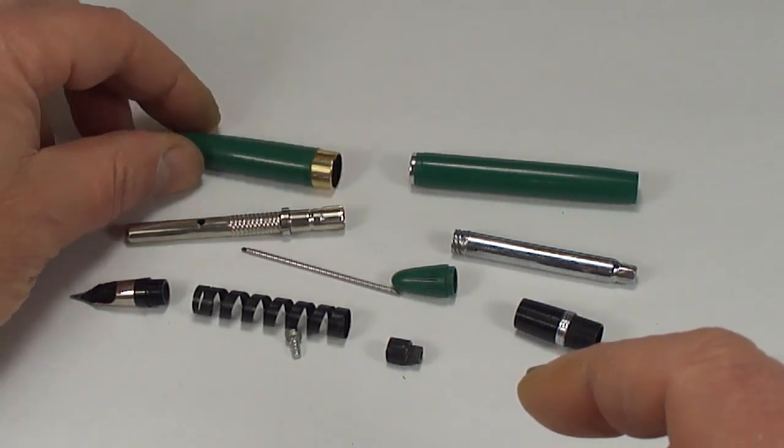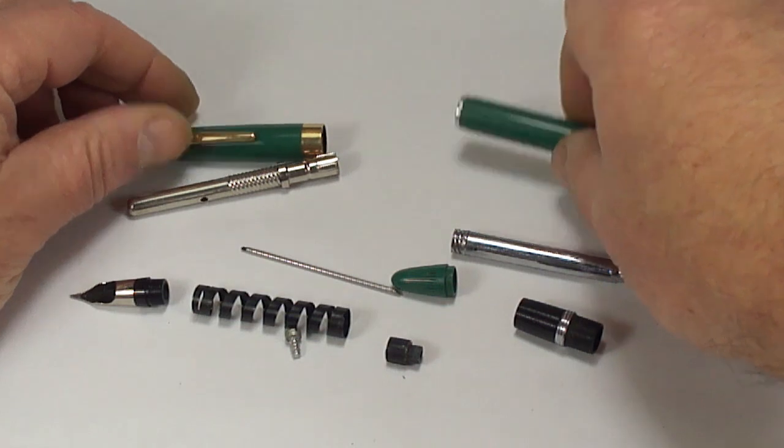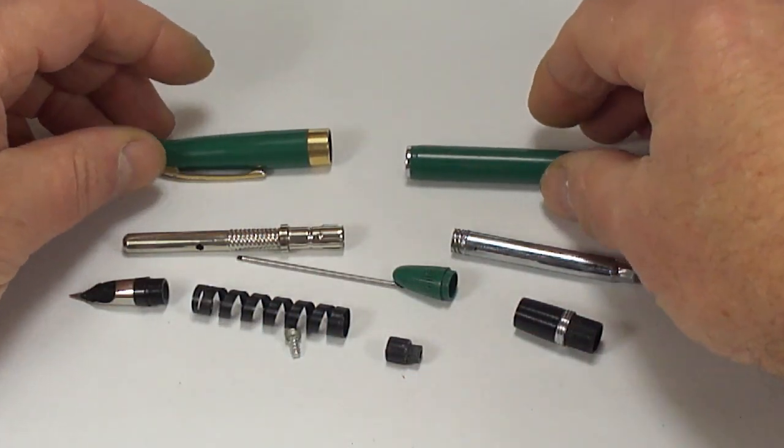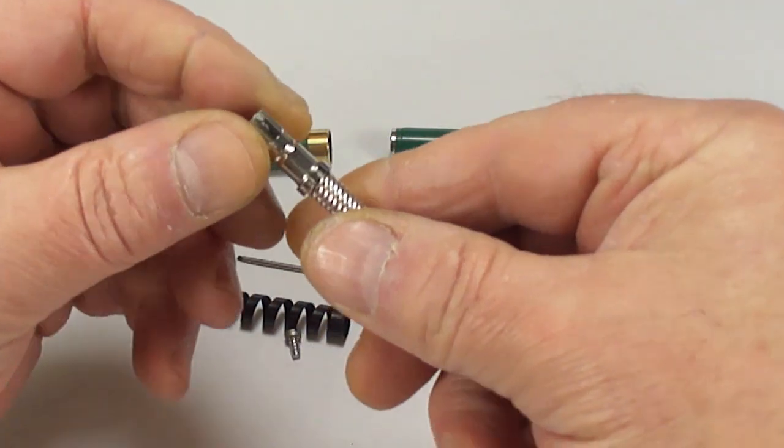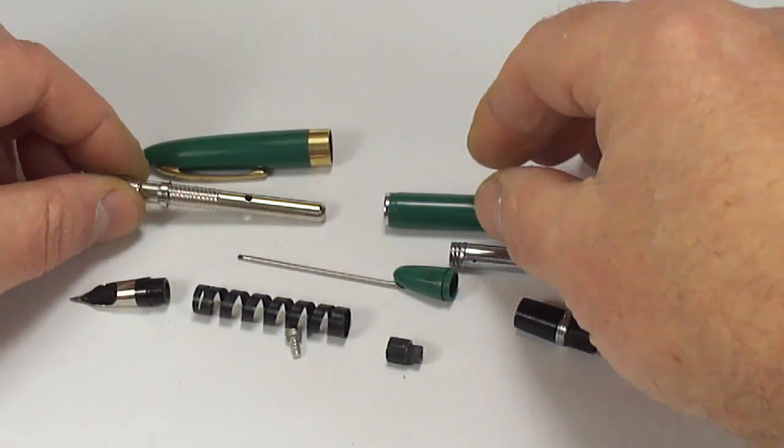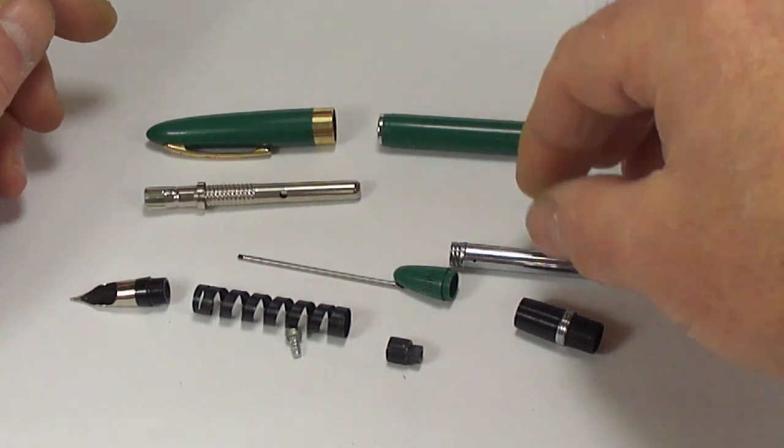So let's get on with it. Nice and simply we've got the cap to the pen, we've got the barrel to the pen which are the most important parts, and then inside we have a sack protector. The sack goes inside.